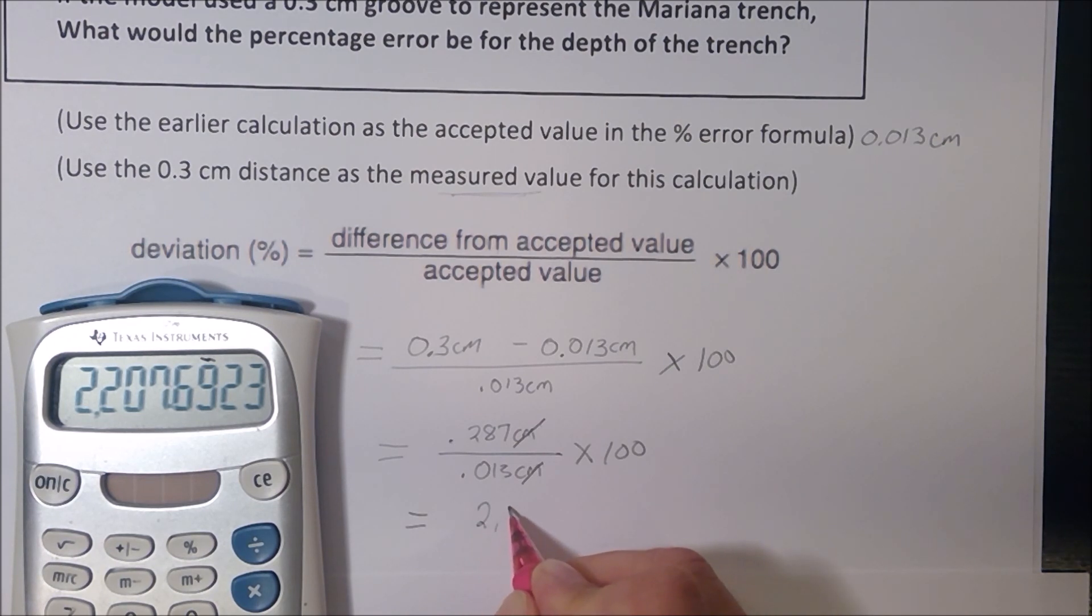And I wind up with 2,200. And let's say we round that to a whole number. It would be 2,208 percent error. So their 0.3 centimeter scratch or groove is over 2,200 percent too deep.